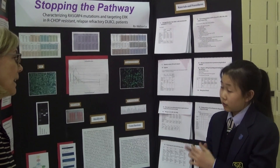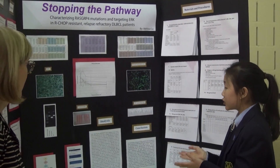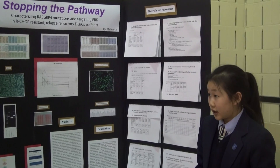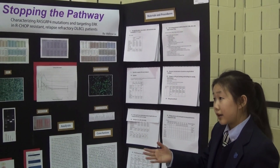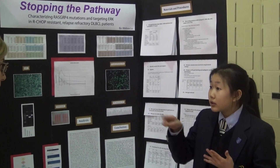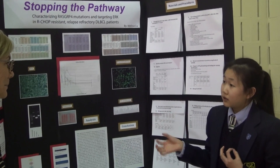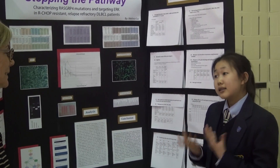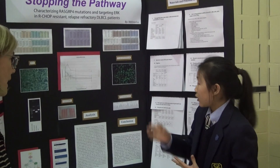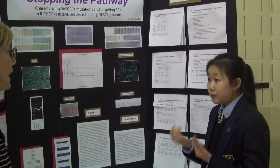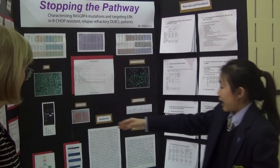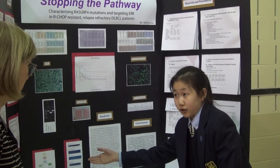These mutations were found in the RASGRAP-4 gene at three specific points: 280, 304, and 404. So in a nutshell, the main goal of my project was to determine what effect these mutations had on the activation of a pathway called the RAS-MEK-ERK pathway. The RAS-MEK-ERK pathway is actually three proteins in a chain reaction, and it's very important in cells because it signals the cells to grow and to survive — it really tells the cells what to do.